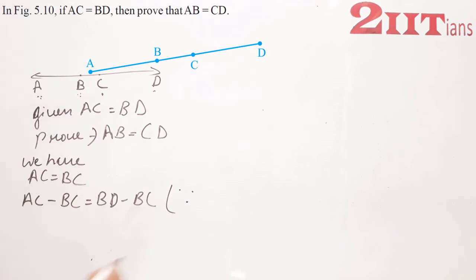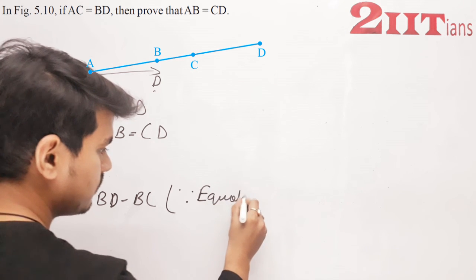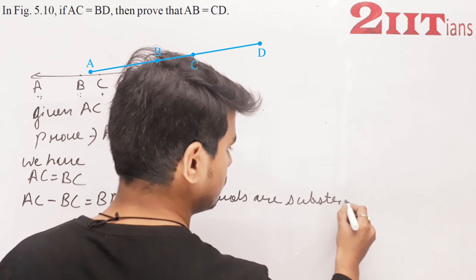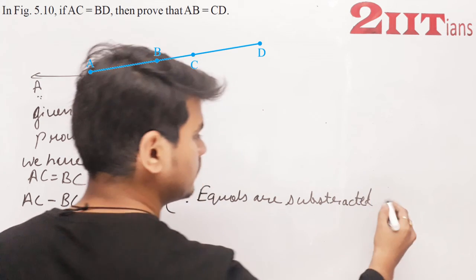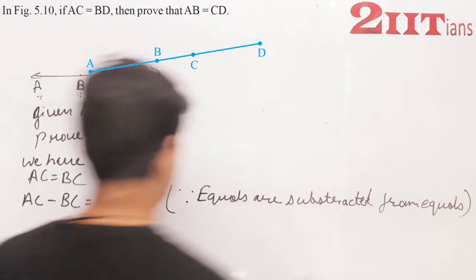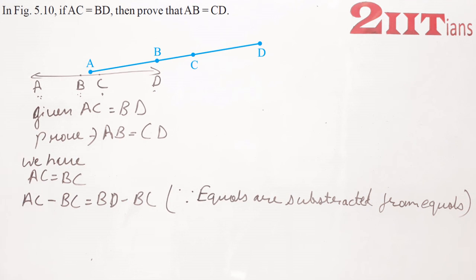हम लोग यहां लिख देंगे, since equals are subtracted from equals. Hence AB equals to CD. Proved.